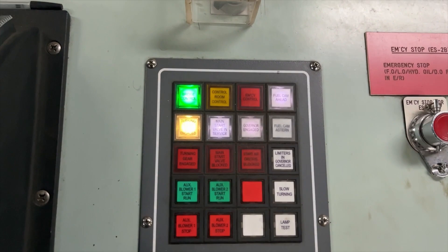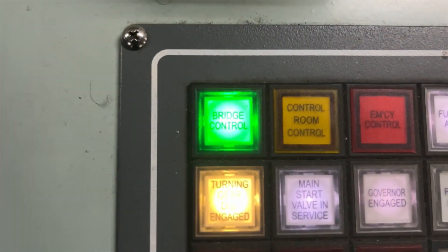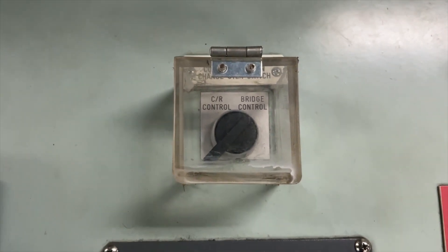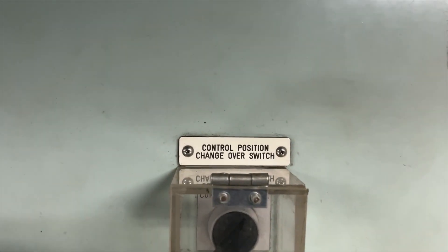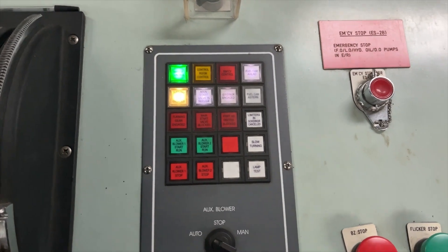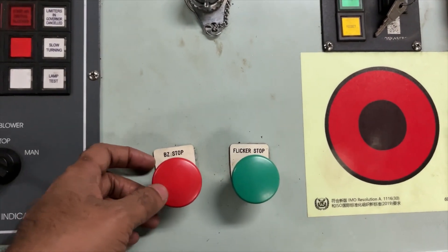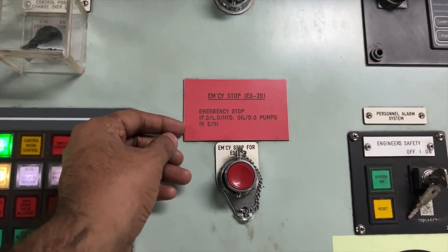Right now the engine is running in full ahead and this is the fuel control lever. This is the indication panel for main engine, right now it is in bridge control. You can see here this is the buzzer and flicker stop for any alarm, emergency stop for fuel.